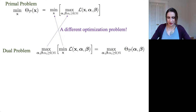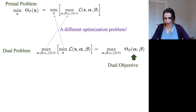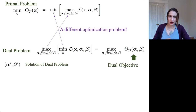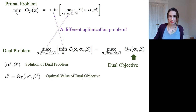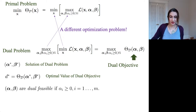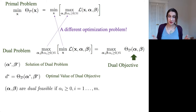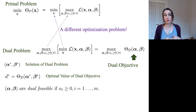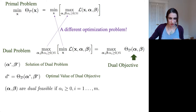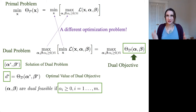I'm going to define the dual objective theta_d as the stuff in the brackets. You fix alpha and beta, and theta_d is the min over x of the Lagrangian with respect to that fixed alpha and beta. We'll call that the dual objective. Alpha star and beta star are the solutions to the dual problem, and d star is the optimal value of the dual objective. Feasible means constraints are obeyed. Beta has no constraints, but alpha must be non-negative, because otherwise the Lagrangian wouldn't be a valid lower bound for the primal objective.